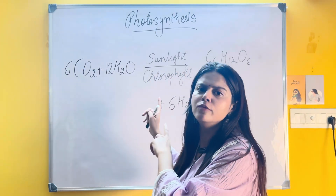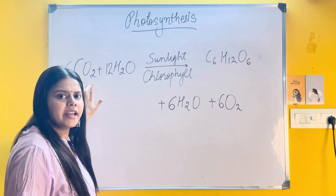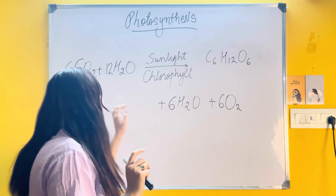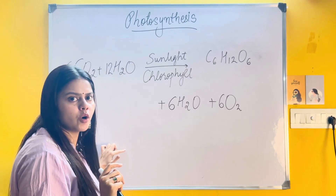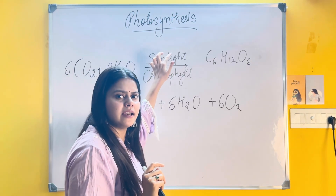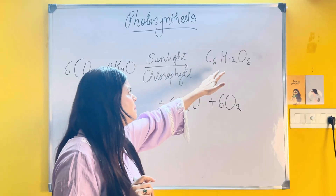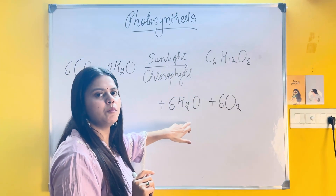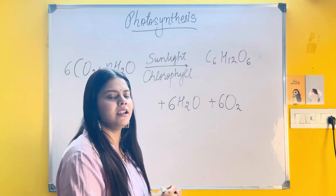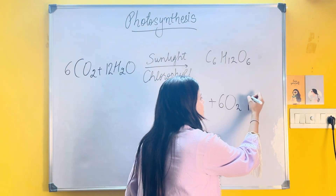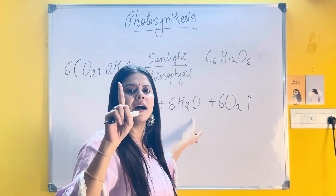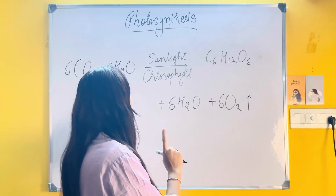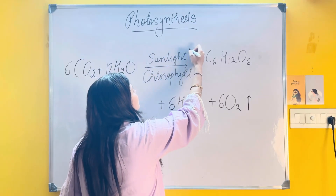Now look at the equation for photosynthesis. Plants take in carbon dioxide from the atmosphere by diffusion. They absorb water from the soil. In the presence of sunlight and chlorophyll, they make their own food in the form of glucose. New water molecules are formed and oxygen is given out into the atmosphere. This reaction comes for one mark in your board exam, so while writing the equation, make sure it is balanced. Sunlight and chlorophyll are very important.